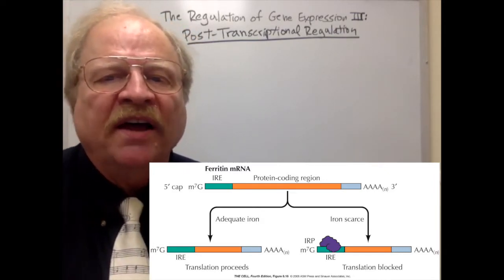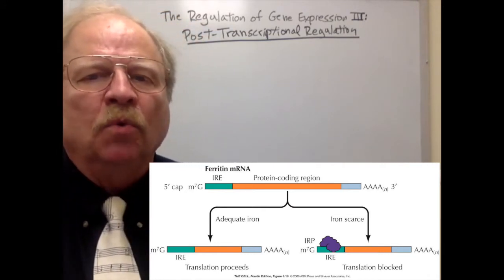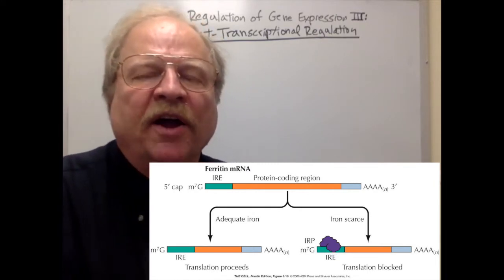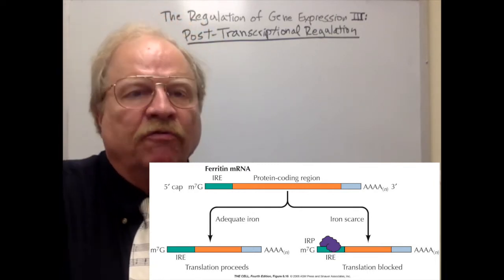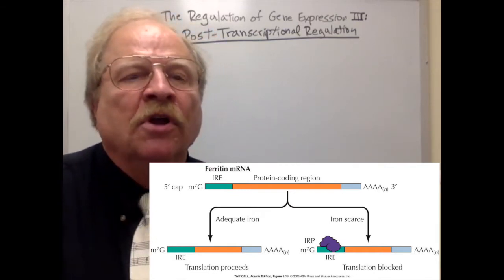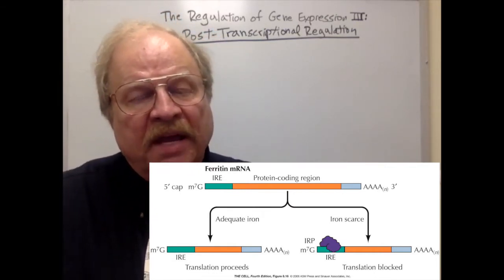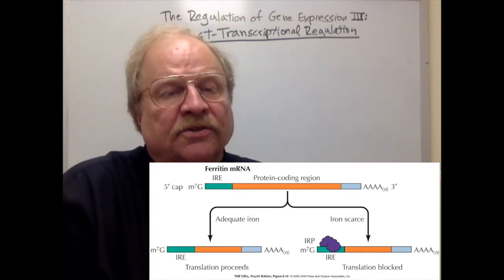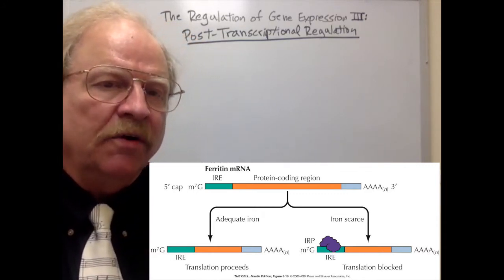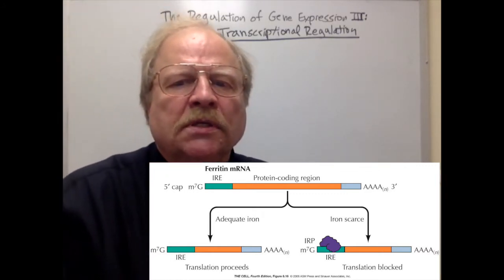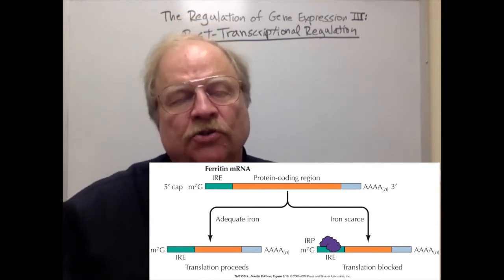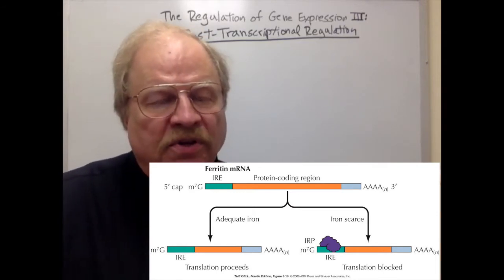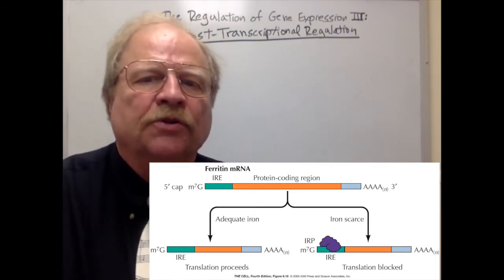Now, in the presence of iron, IRP1 becomes inactive and IRP2 is degraded. So in the presence of iron, we don't have IRP bound to IRE, and therefore translation is free to occur. So if you have iron, we're going to translate the messenger RNA and make the protein to store iron. If you don't have extra iron floating around, then you don't need to make it, and so IRP is bound to IRE, turning off translation. This is a case in which we're making the messenger RNA, but then whether or not the messenger RNA is actually translated into protein is controlled at the translational level, rather than at the transcriptional level.